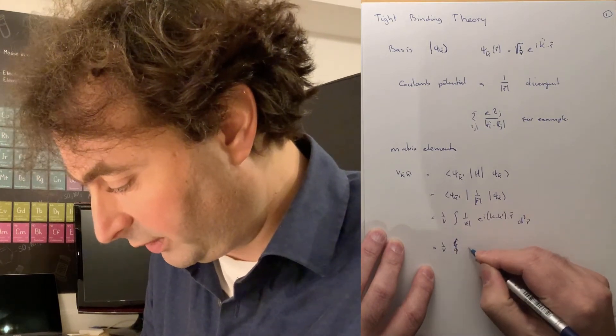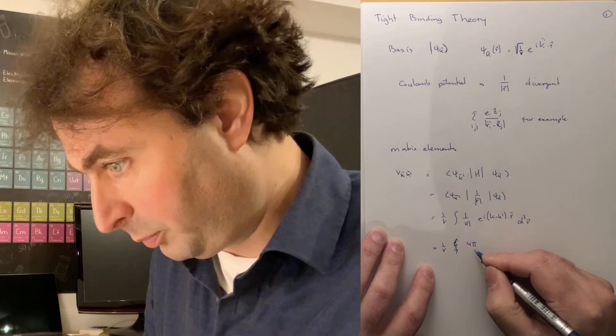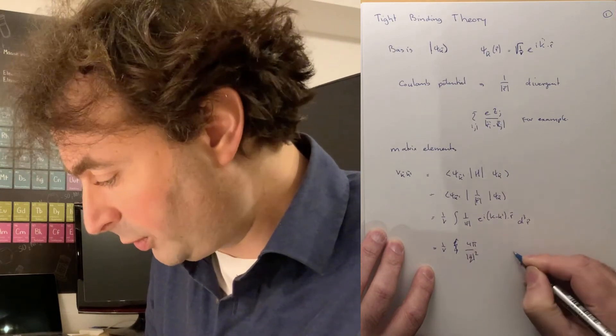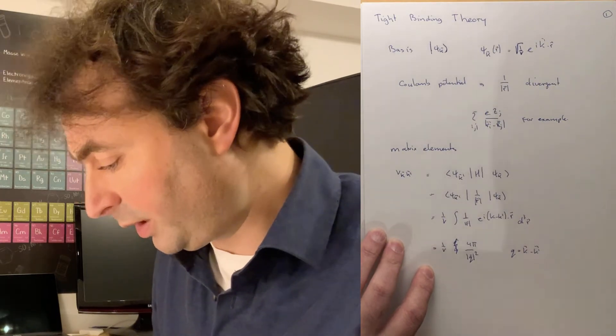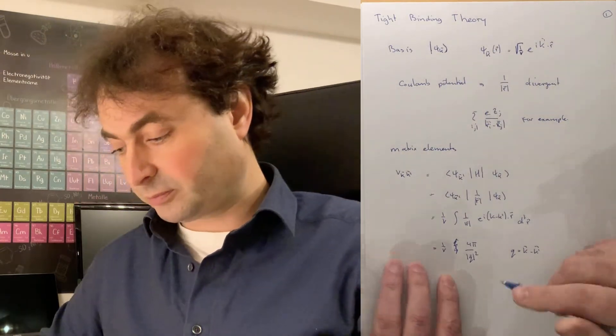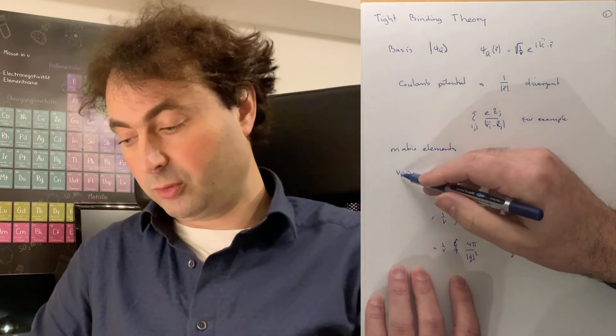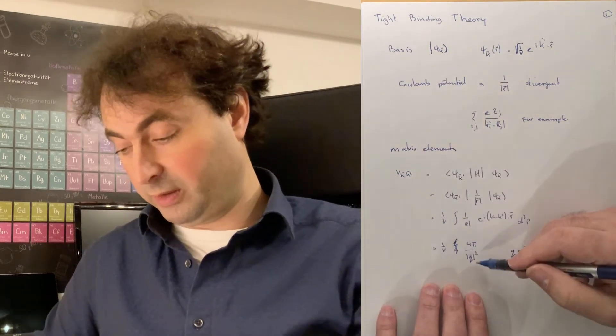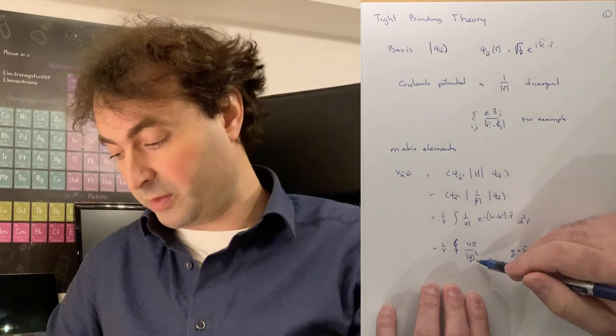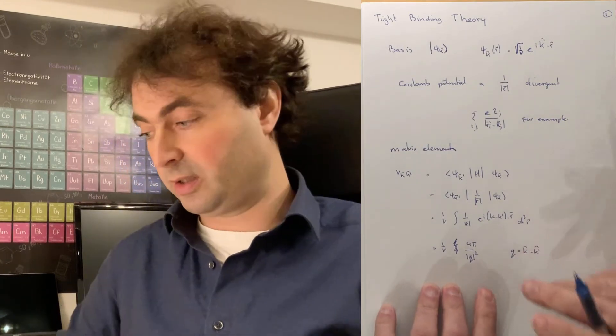And the volume v goes to infinite. But what we have is 1 over v, oh, we're not integral anymore, 4 pi over q squared, where q is k minus k prime. So again, we see that when two wave vectors have momentum that is very close to each other, or the norm is very close to each other, then their interaction is divergent.